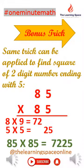The same trick can be applied to find the square of a 2-digit number having 5 at the 1's place. See the example here.